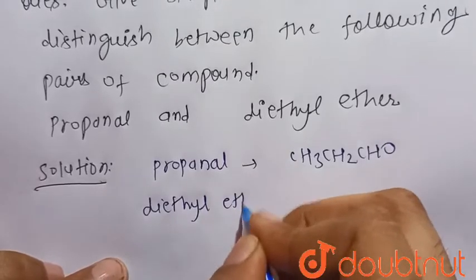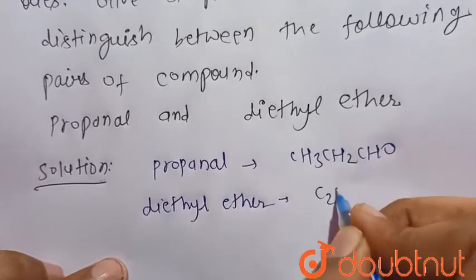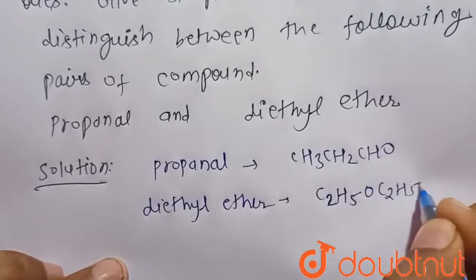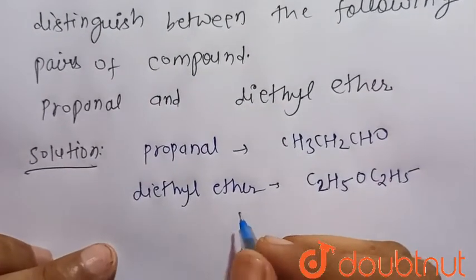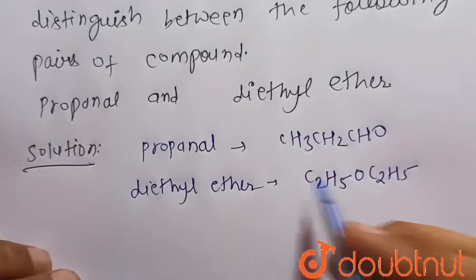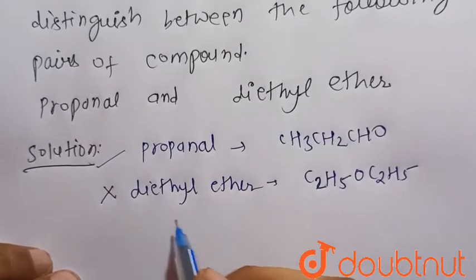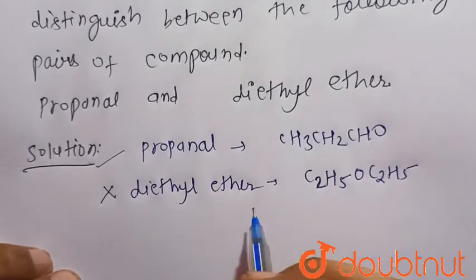It can be distinguished by the Tollen's test because we know that aldehydes give positive Tollen's test but ethers do not give positive Tollen's test, or they give negative Tollen's test with the Tollen's reagent.